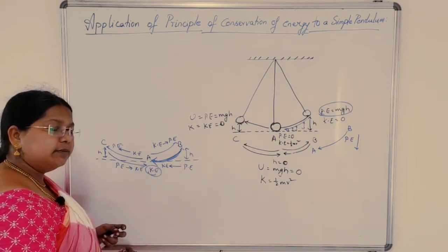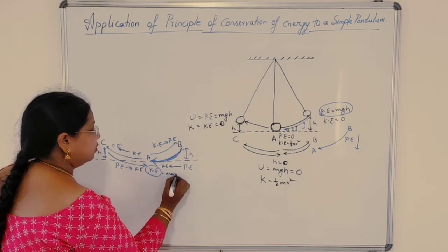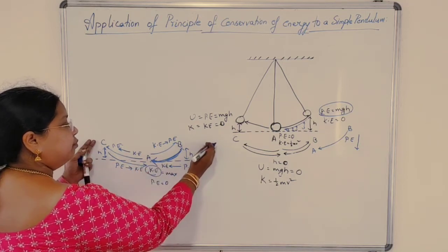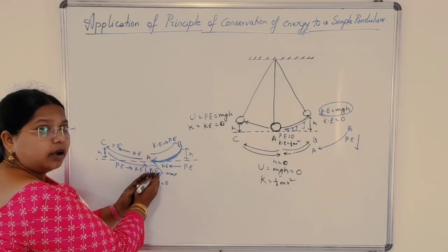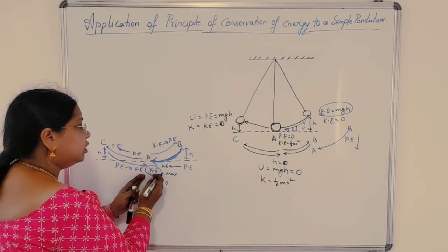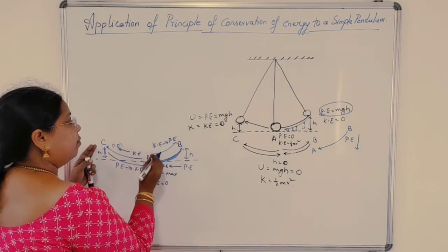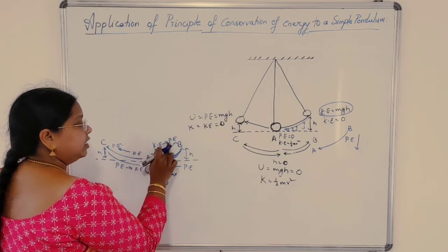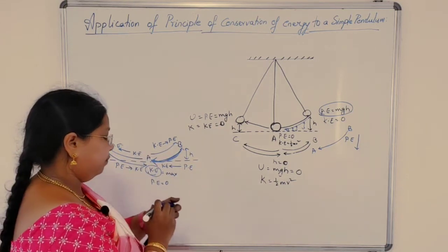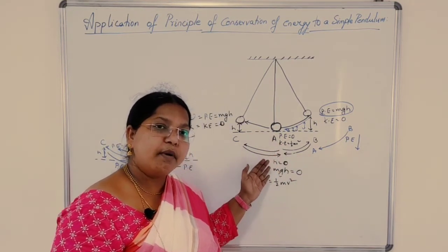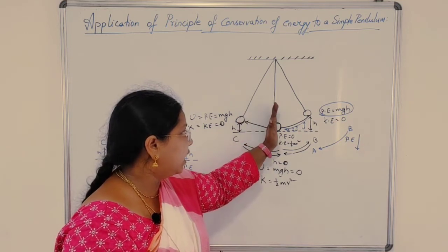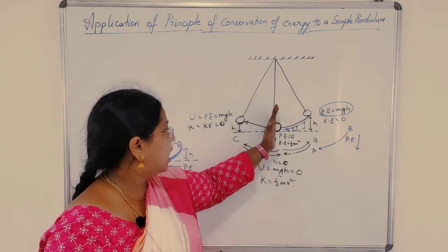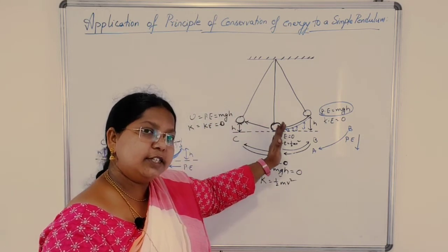Kinetic energy is maximum and potential energy is 0 at the mean position. From the mean position moving to the extreme position, kinetic energy is more and potential energy is 0 since height is 0. As height increases when the bob moves from mean to extreme, potential energy slowly increases and kinetic energy converts into potential energy. When moving back, potential energy is converted to kinetic energy — and this cycle repeats.